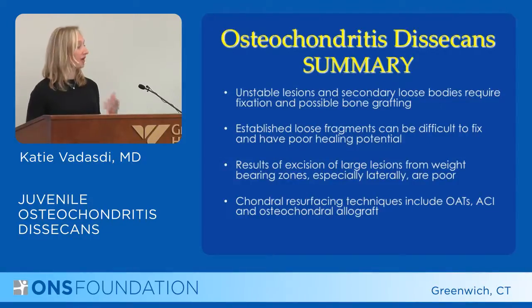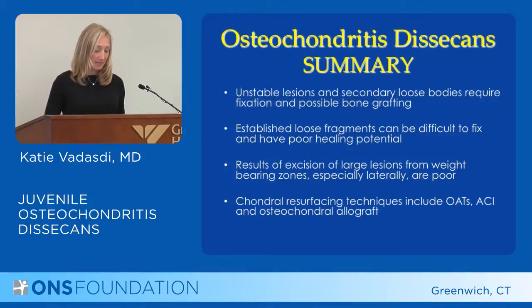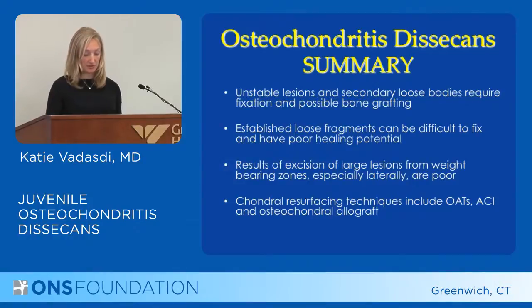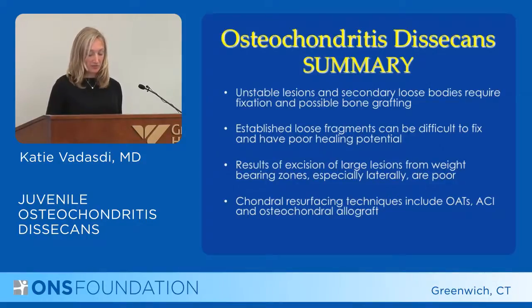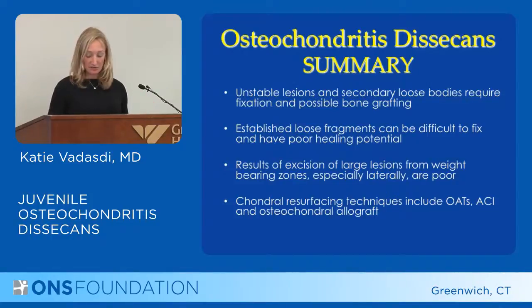Unstable lesions and secondary loose bodies often do require fixation — you put the screws in arthroscopically, which is a pretty straightforward and limited surgery. Established loose fragments that have been present for a while tend to have poor healing potential. Results of excising large lesions from weight-bearing zones can be poor. The chondral resurfacing techniques we discussed — OATS, ACI, and osteochondral allograft — are all potentially good options in kids. Most don't require these, and you don't want to have to go to that level, but they can work very well.